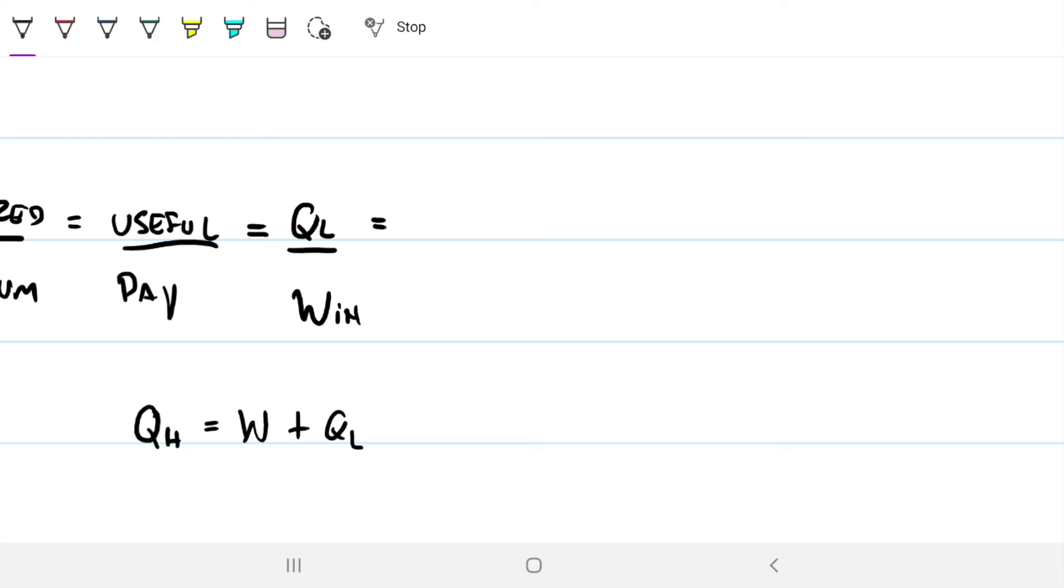So I can substitute things in there and I can have this as QL divided by QHot minus QL. And if I want to divide the whole expression on the top and bottom by QL, so if I take QL, QL.